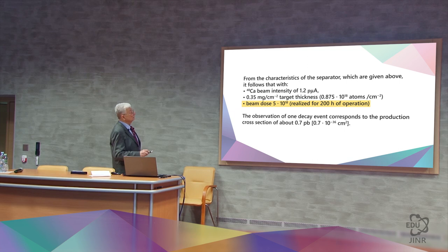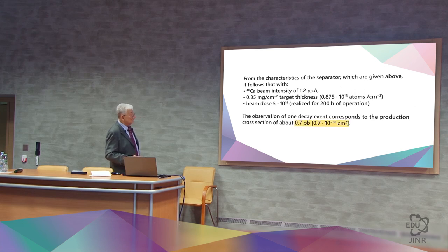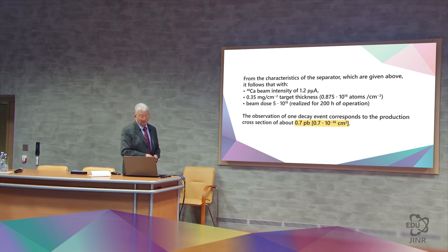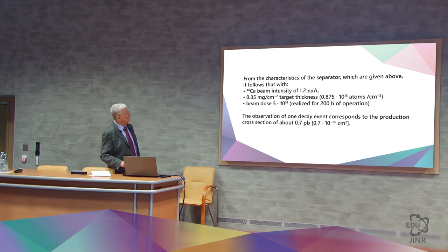We collect a dose of the beam with an intensity of 5 times 10 to the power of 18 for 200 hours, which is about a week. Then the observation of one decay event equals 0.7 picobarns, that is, 0.7 times 10 to the power of minus 36 centimeters squared in cross-section.